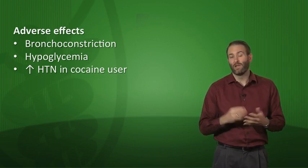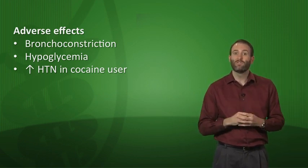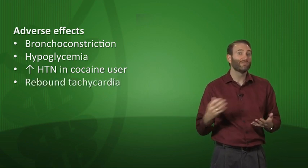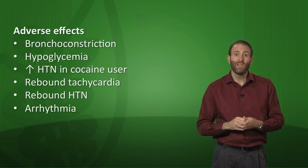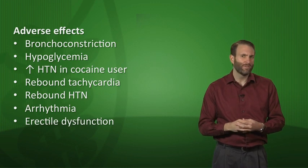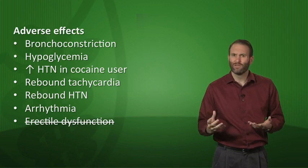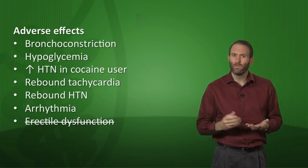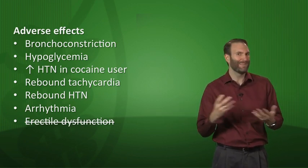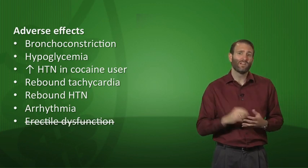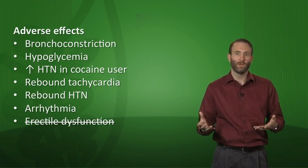Another potential problem is abruptly stopping a beta blocker — you can get rebound tachycardia, rebound hypertension, and even arrhythmia in susceptible patients. You may have heard that beta blockers cause erectile dysfunction, but recent studies haven't really confirmed this. If you think about it, erection is initiated by the parasympathetic nervous system — remember the mnemonic point-and-shoot — so it's hard to inhibit an erection by blocking a receptor in the sympathetic nervous system. Some studies suggest this may be a placebo effect, since men have been told for years that beta blockers cause ED.